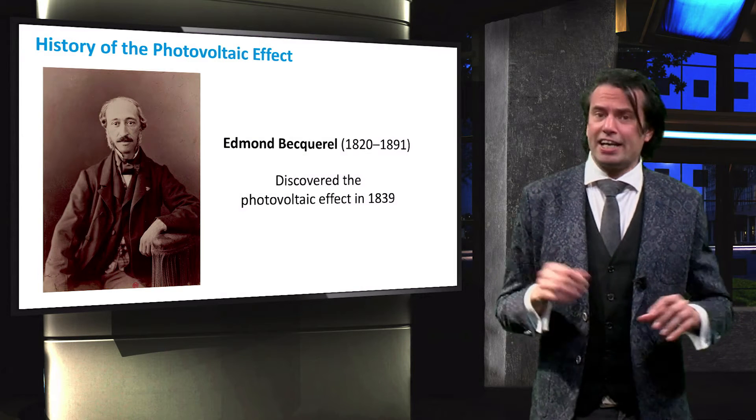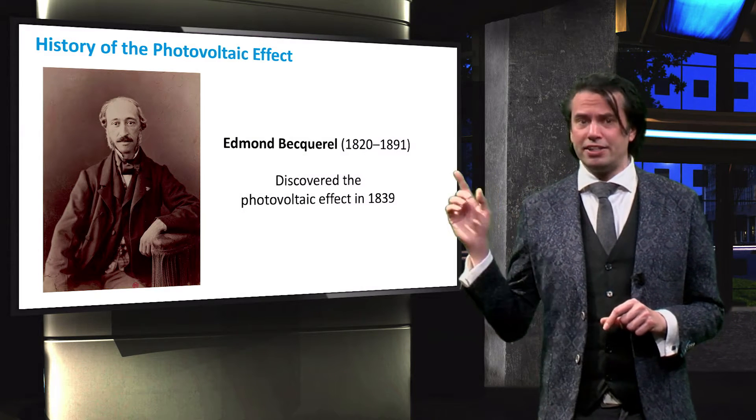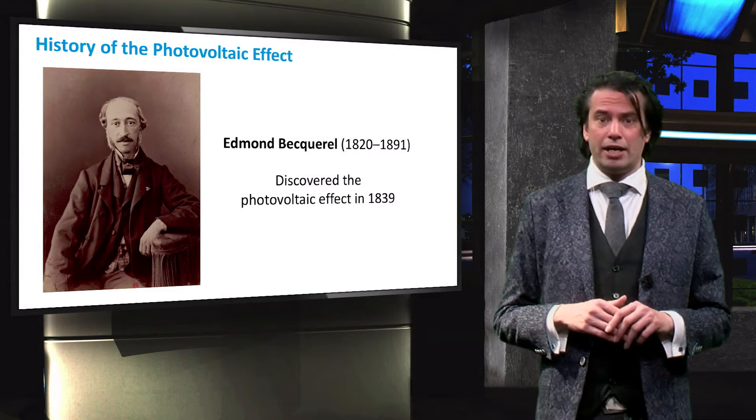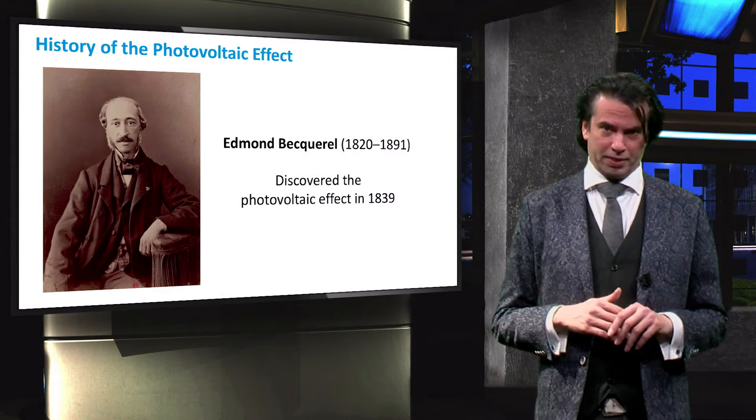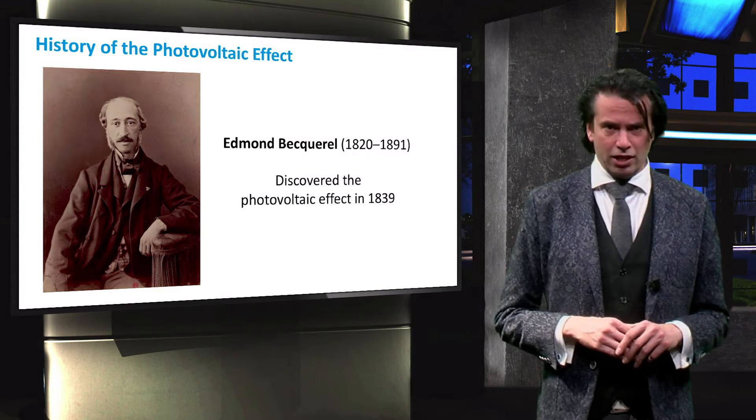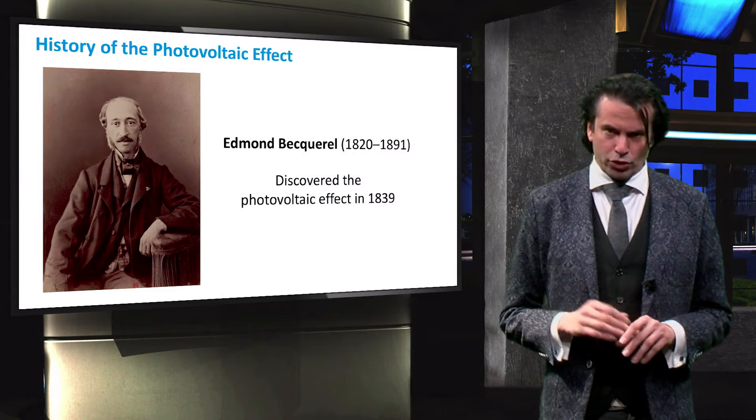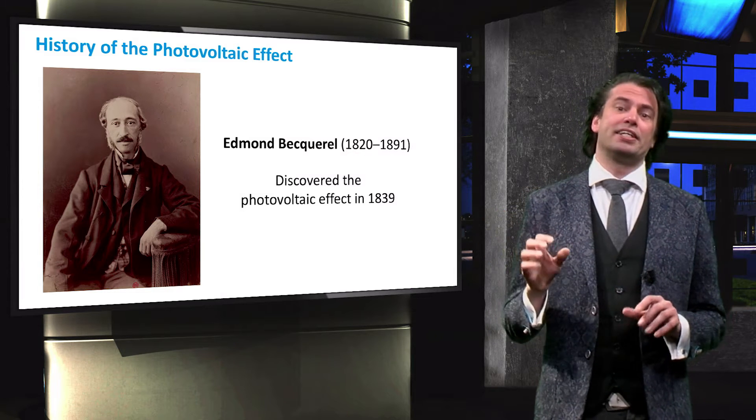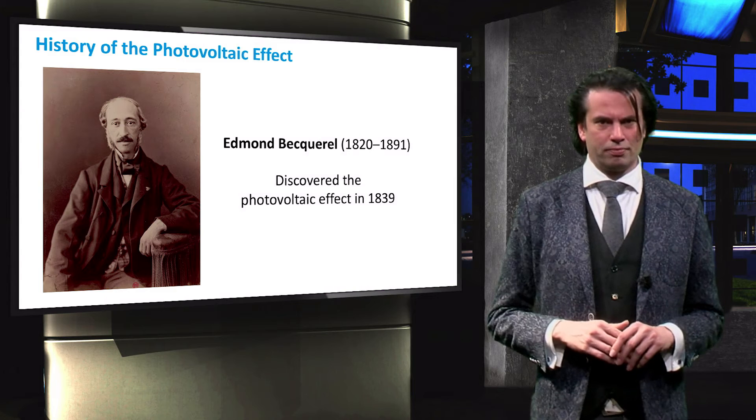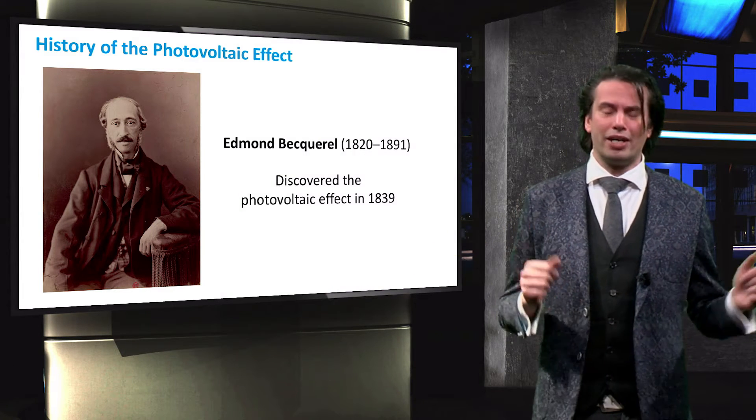The photovoltaic effect was discovered in 1839 by the French physicist Edmond Becquerel. At the age of 19, Becquerel created the first photovoltaic cell by illuminating platinum electrodes coated with silver chloride in an acid solution. This device was the first to convert light into electricity.